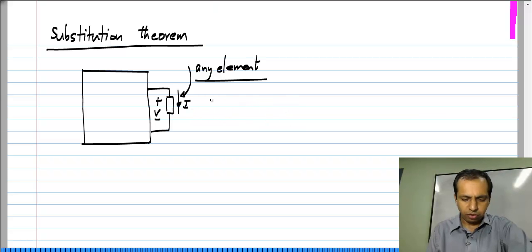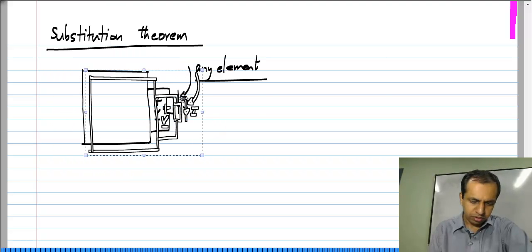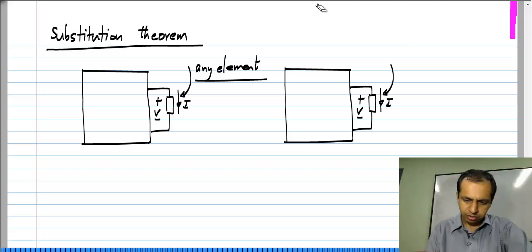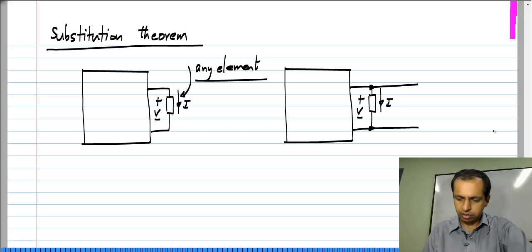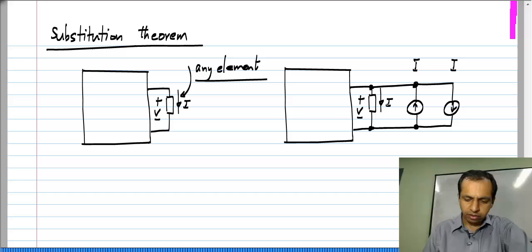Now, consider the following modification to the circuit. I will take the same circuit and across this element I will connect a current source like this and a current source like that. I will choose the values of these current sources to be exactly I, where I is whatever current is flowing through the element E.